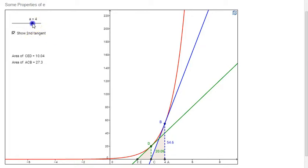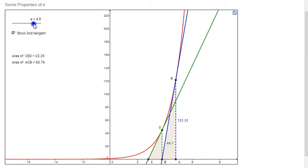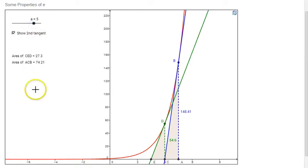Okay, let's make A be equal to 5. So we have smaller is 27.3, larger is 74.21. Please find the ratio again. I don't need that many digits, Vedant, just 4 or 5 digits is enough.